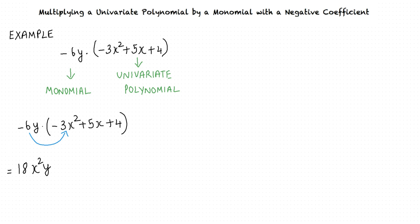We multiply the first term which is negative 3x square by negative 6y and we get 18x square y. Next, we multiply the second term which is 5x by negative 6y and we get negative 30xy. Finally, we multiply the last term which is 4 by negative 6y and we get negative 24y.